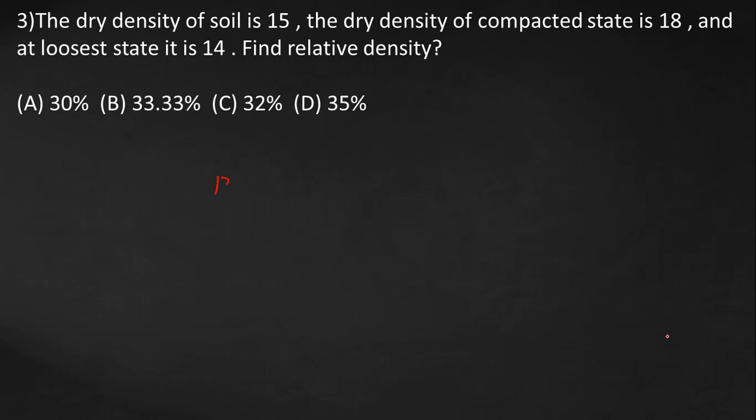We have Rd equals 1 by gamma-d minimum minus 1 by gamma-d, all by 1 by gamma-d minimum minus 1 by gamma-d maximum. That equals 1 by 14 minus 1 by 15, all by 1 by 14 minus 1 by 18. This equals approximately 30 percent, so the answer is A.